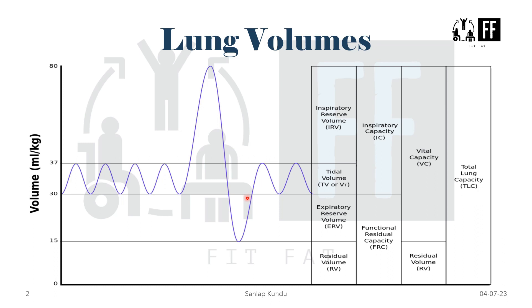When we do forceful expiration after a normal expiration — basically the amount of air that can be expired forcefully after the tidal volume — that is the expiratory reserve volume. The normal value of this is 1000 milliliters, or one liter.